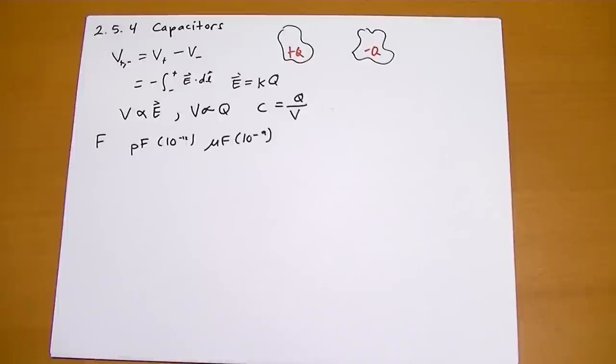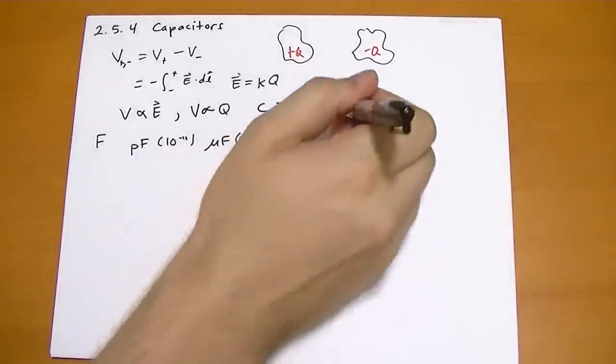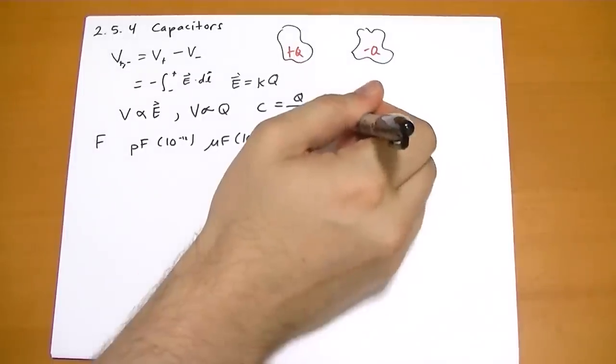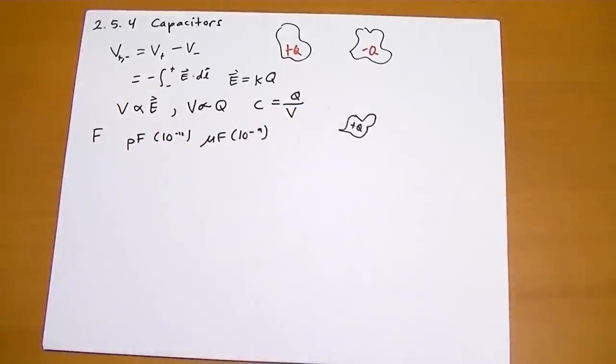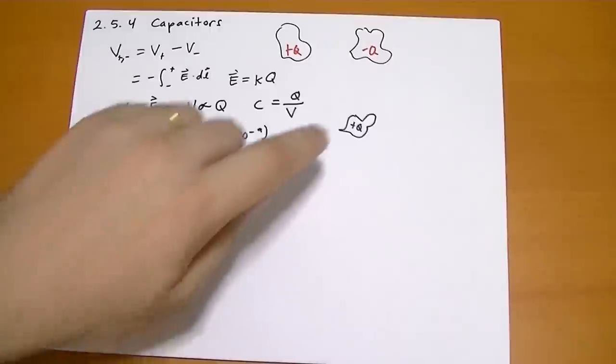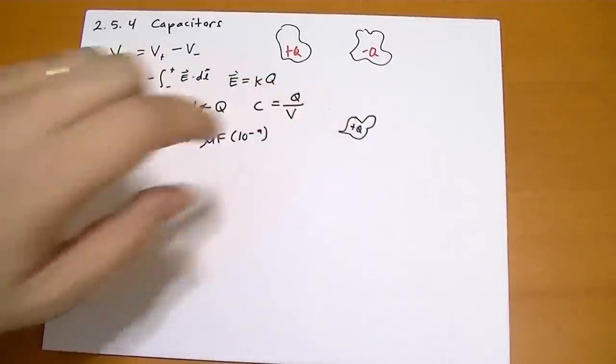And sometimes you might hear of somebody taking some shape, putting some charge on that, and then talking about the capacitance of that single object. And what they're really talking about is the capacitance of this object with the other object being an infinite sphere with negative Q on it.